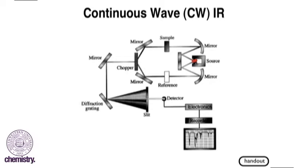We take our source of IR radiation, and the first thing we do is we split the beam into two. Why do we do this?